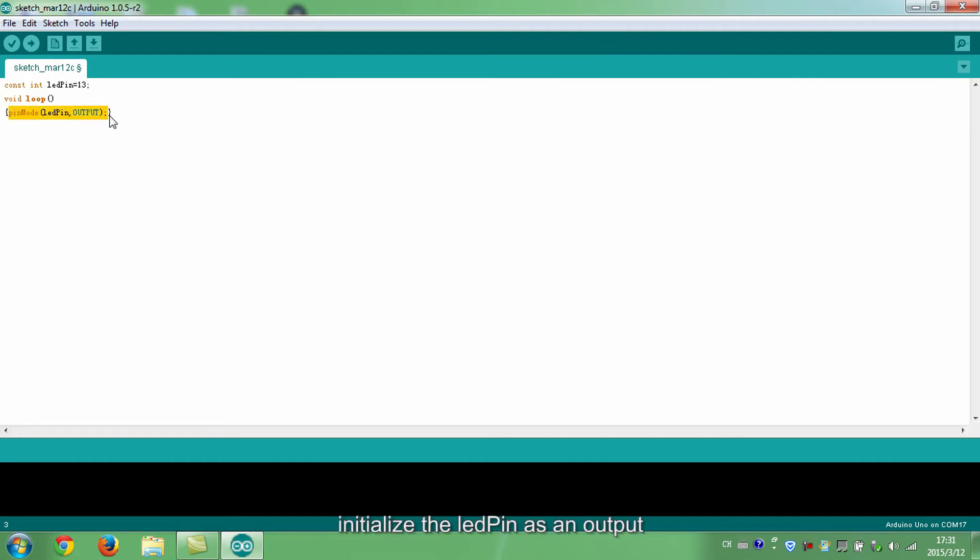Initialize the LED pin as an output. Initialize pin 2 as an input to which the tilt switch links. Set pin 2 as high.